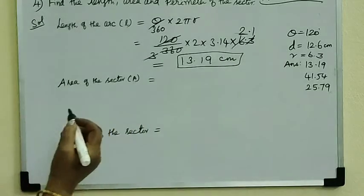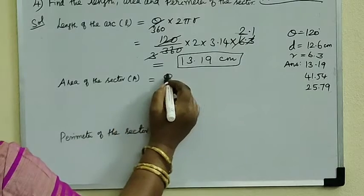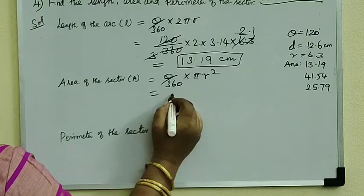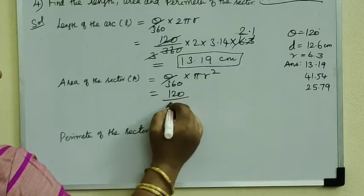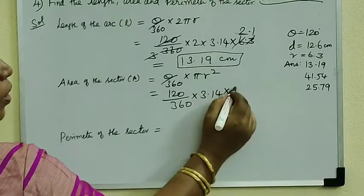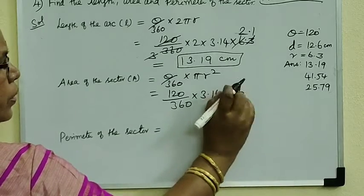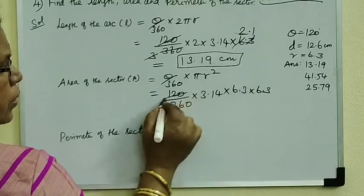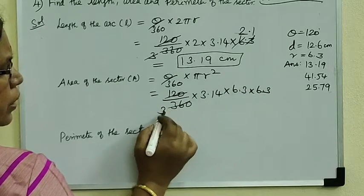Area of the sector. Area of the sector formula: theta by 360 into pi R squared. So theta value 120 by 360 into 3.14, R equals 6.3, 6.3 into 6.3. If you cancel it, it is 3 times.